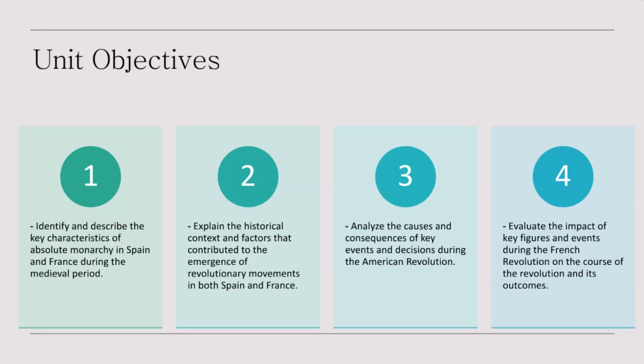Shifting our focus to the other side of the Atlantic, we will analyze the causes and consequences of key events and decisions during the American Revolution. The American Revolution was sparked by grievances over taxation without representation and a desire for independence. The Declaration of Independence in 1776 signaled the birth of a new nation, the United States of America. The conflict with Great Britain was marked by notable battles like Saratoga and Yorktown. Key figures like George Washington and Benjamin Franklin played instrumental roles, leading to the Treaty of Paris in 1783, which recognized the United States as a sovereign nation and reshaped the global balance of power.